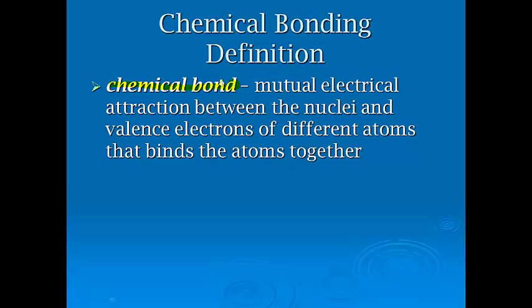The formal fancy definition of chemical bond is a mutual electrical attraction between the nuclei, which are positively charged because they have the protons, and the valence electrons, which are negatively charged, of different atoms that helps bind the atoms together. So it's this whole proton-electron attraction.